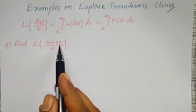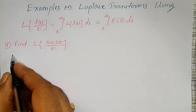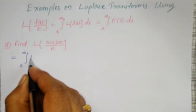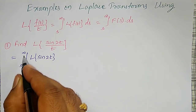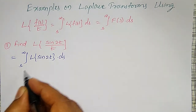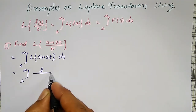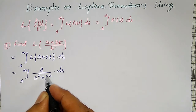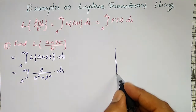Let us find the Laplace transform of sin(2t) divided by t. This is f(t) divided by t, so applying the property, I can write it as integration from s to infinity of the Laplace transform of sin(2t) with respect to ds. The Laplace transform of sin(2t) I know, and I have to integrate between the limits s to infinity with respect to s.